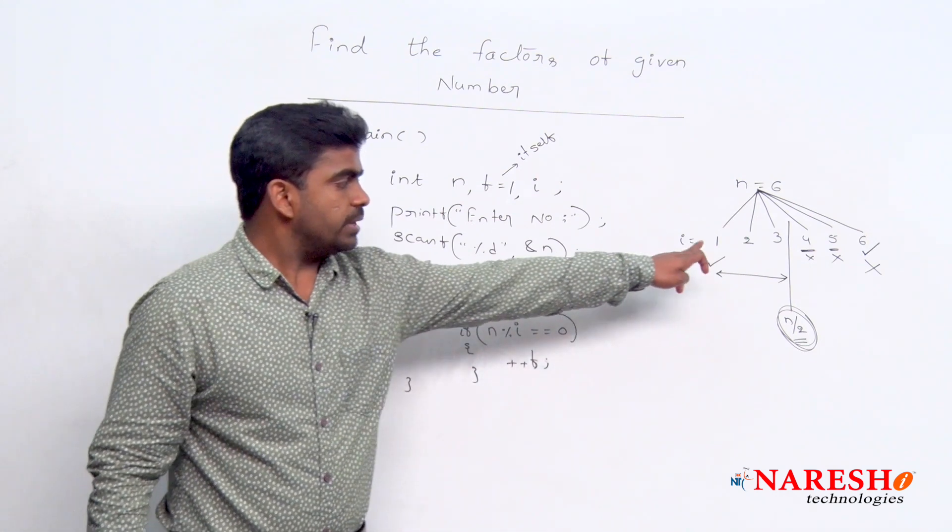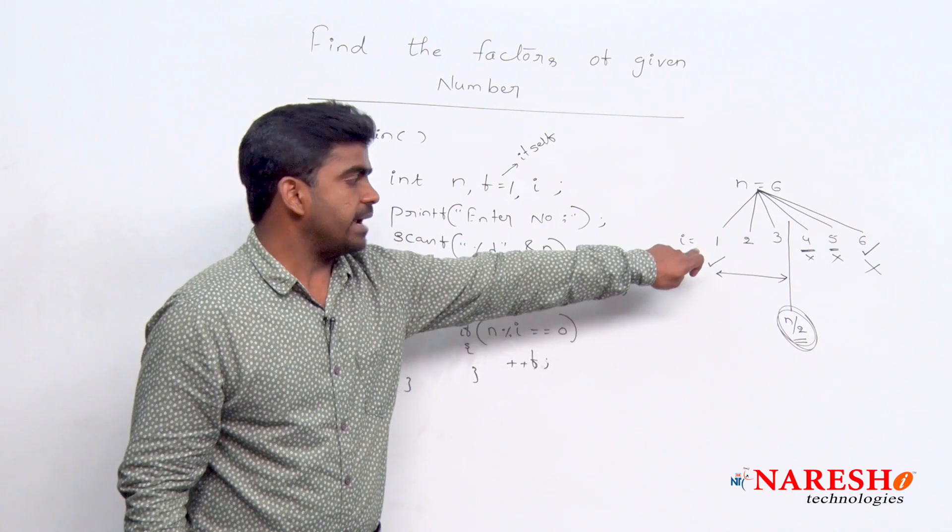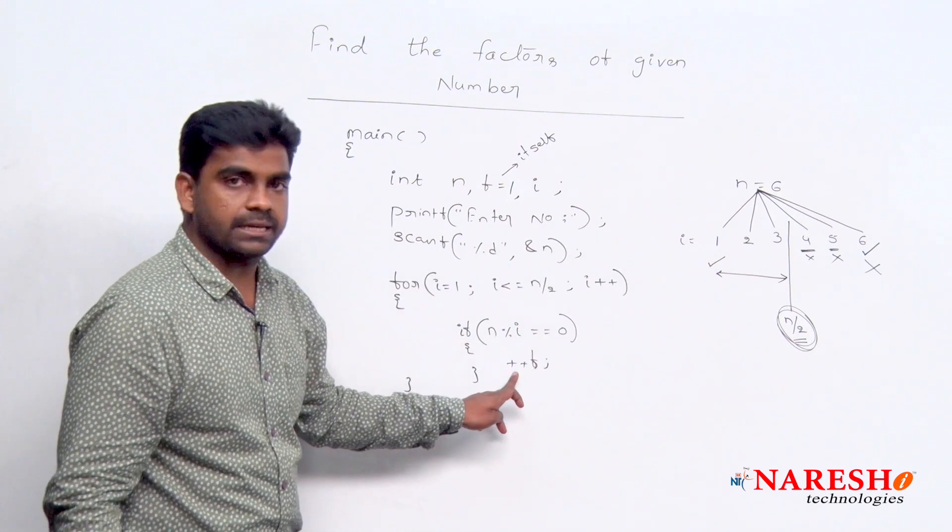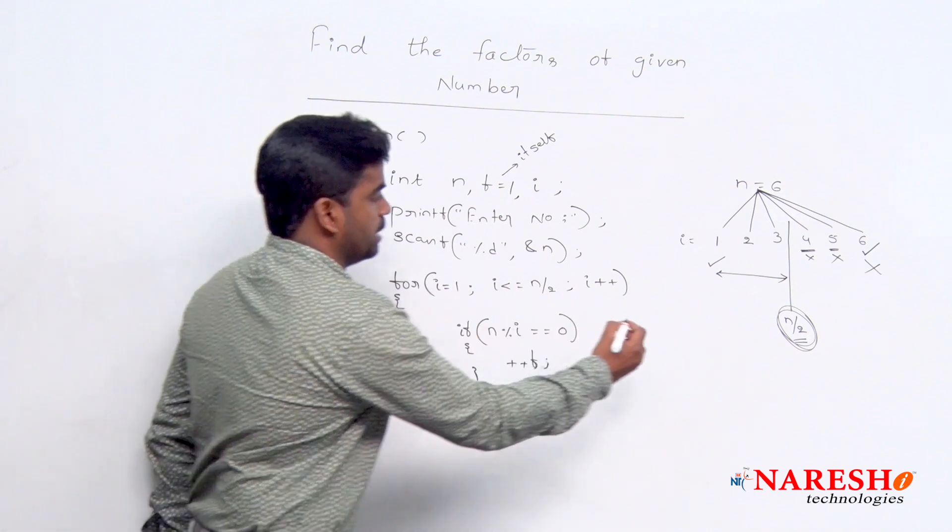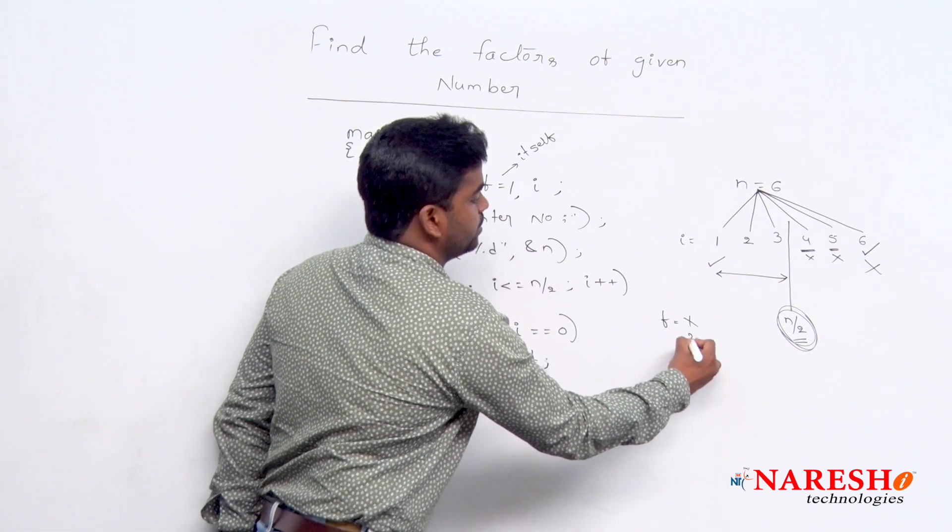Here the first i value is 1, so 1 is the factor. f value get increased, f value initially 1 that will become 2.